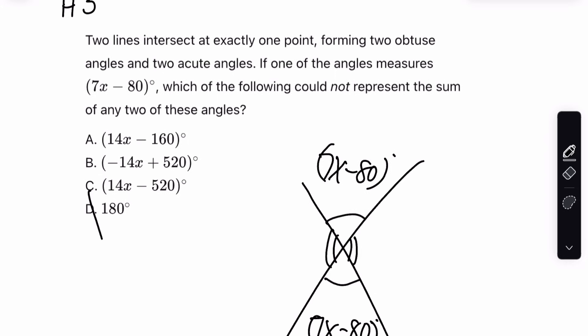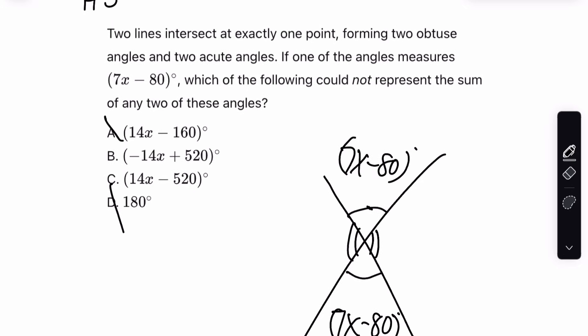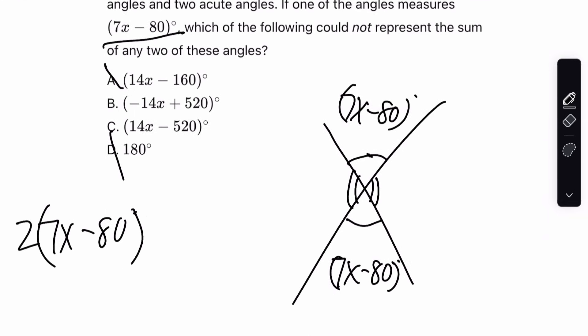First of all, we know D is immediately wrong because these two angles right here, they add up to 180 because they're on a straight line, and so do the ones on the other side of the line. A is also wrong because if you take this original angle that we were given, the 7x minus 80, and you multiply it by 2, we get 14x minus 160, which is exactly what A is. Meaning, the sum of this angle and itself, because this is also on the other side, is 14x minus 160.